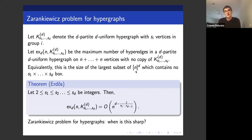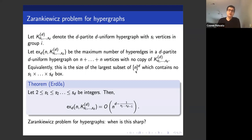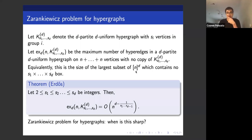Erdős proved an upper bound generalizing the Kővári–Sós–Turán argument: for every d-tuple of integers s_1 ≤ s_2 ≤ ... ≤ s_d with s_1 ≥ 2, the extremal function of the complete d-partite uniform hypergraph is at most a constant times n^{d - 1/(s_1 · s_2 · ... · s_{d-1})}. As in the graph case, the question is when this bound is achieved.